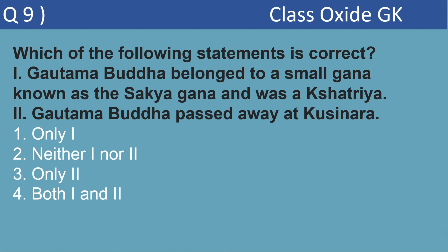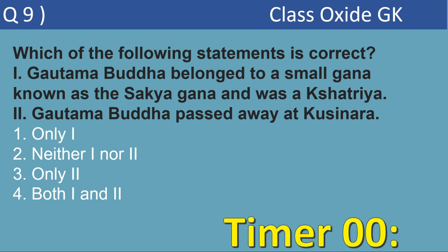Next MCQ. This is a very important question of the type asked in state PCS, UPSC, SSC CGL. Two statements are given: Statement 1 — Gautama Buddha belonged to a small clan known as Shakyagun and was Kshatriya. Statement 2 — Gautama Buddha passed away at Kushinagar. Which statements are correct? Only one, neither, only two, or both? The correct answer is option number 4 — both statements are correct.